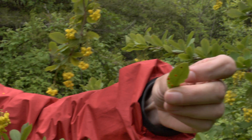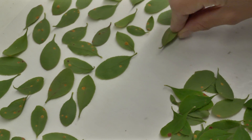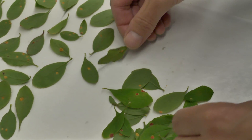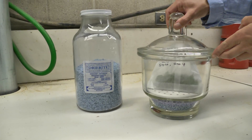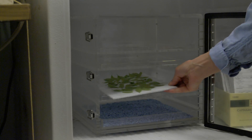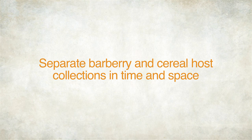It is important to collect the tissues into a type of bag that will not promote condensation. Glassine or paper bags work well — avoid plastic bags. Drying the tissues at room temperature will help preserve the fungal structures and spores for transport and storage. Do not expose the collections to extreme temperatures or allow them to hydrate. For storage periods longer than a week, the tissues should be kept in a dry place at 4 to 8 degrees Celsius. When making collections from the aecial host, avoid contact with the uredinal host to reduce the potential for contamination. Plan activities so that barberry and cereal host collections are separated in time and space as much as possible.